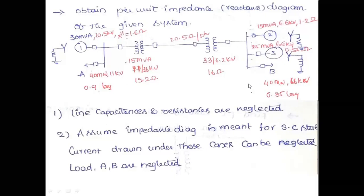Assume the impedance diagram is meant for short-circuit studies. Under these conditions load A and load B can be neglected. So directly, even though load A and load B are present in the single-line diagram, you do not consider those two loads, because the problem itself has mentioned that you have to avoid load A and load B. Except those two, you need to draw the per-unit impedance diagram, the reactance diagram, of this particular system.